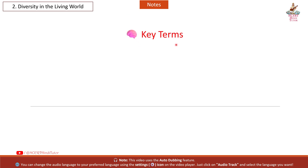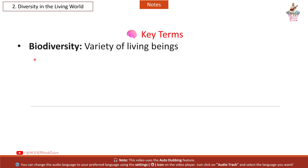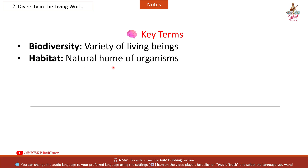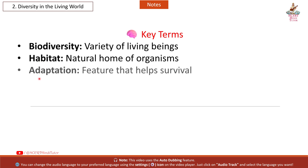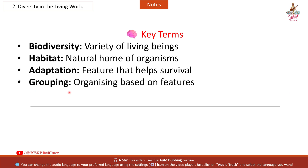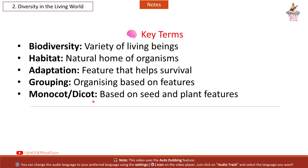Key Terms: Biodiversity — variety of living beings. Habitat — natural home of organisms. Adaptation — feature that helps survival. Grouping — organizing based on features. Monocot and Dicot — classification based on seed and plant features.